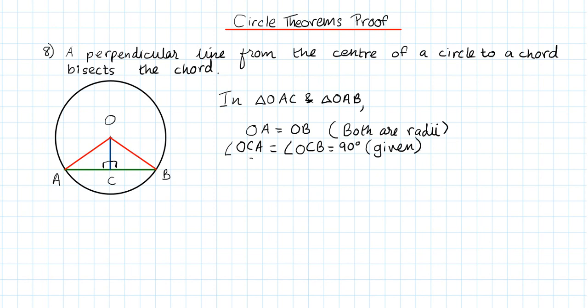And the side OC is equal to OC, it's a common side shared by both triangles. So we can then say that triangle OAC is congruent to triangle OBC using the RHS rule. So we've used a right angle which is a 90 degree angle, the hypotenuse which was the two radii, and the side which was OC.